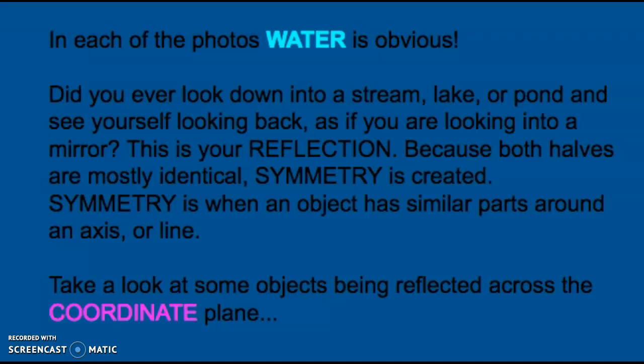Did you ever look down into a stream, lake, or pond and see yourself looking back as if you were looking into a mirror? This is your reflection. Because both halves are mostly identical, symmetry is created. Symmetry is when an object has similar parts around an axis or line.